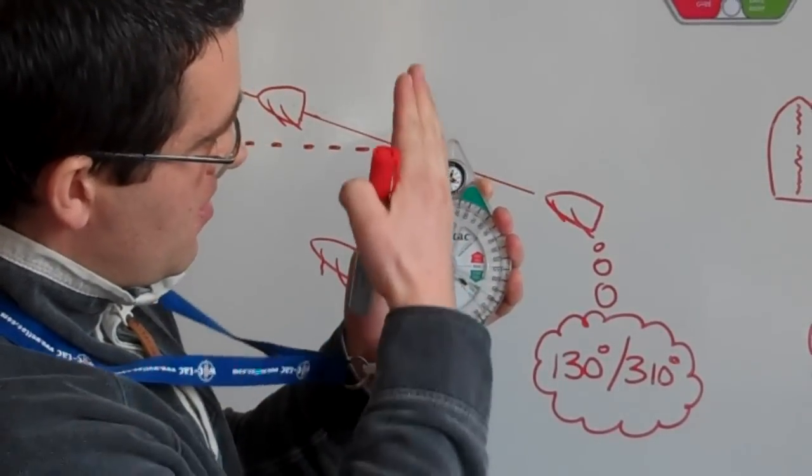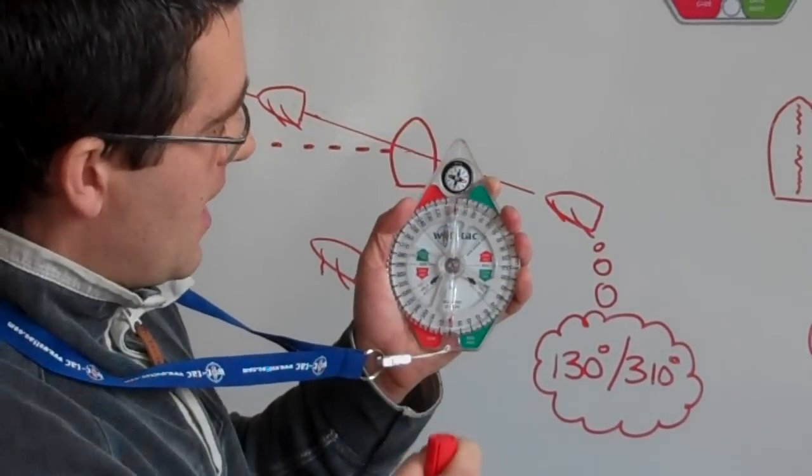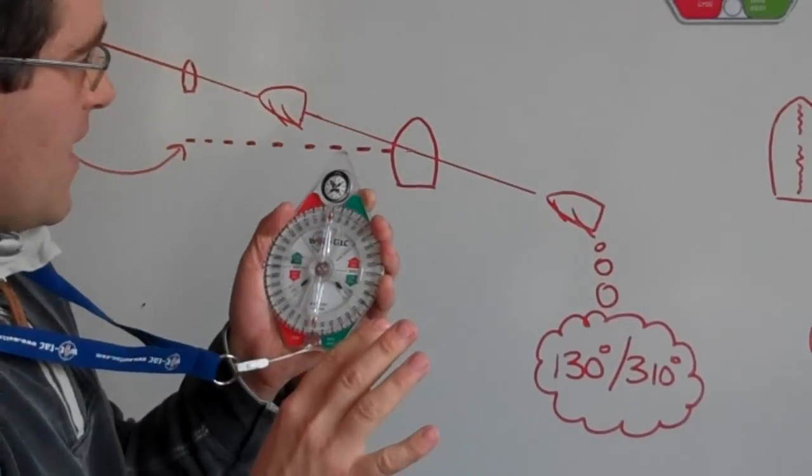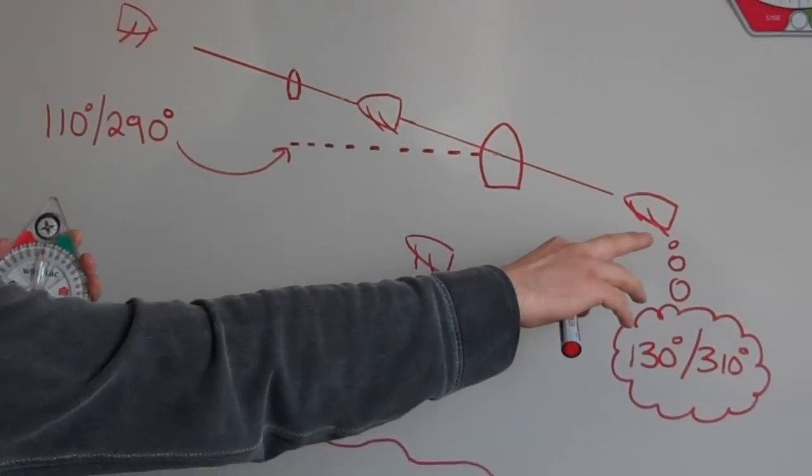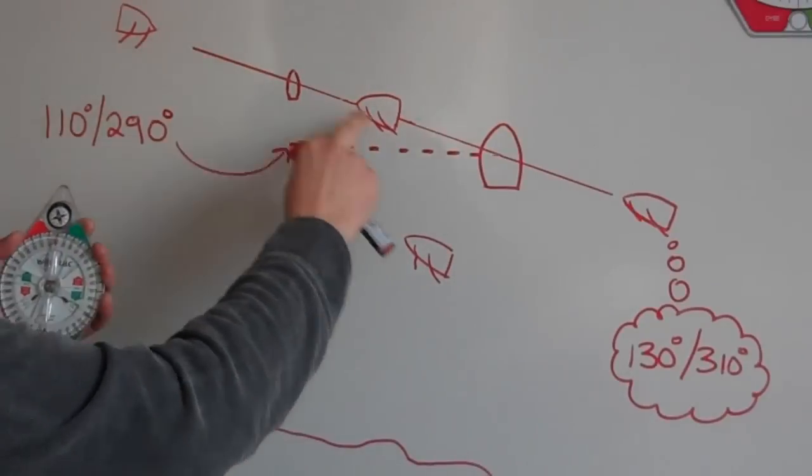So 200 and the pointer are in a perfect straight line up and down. So we've done that. There's just one more stage. The next stage is to establish the bearing of our start line.